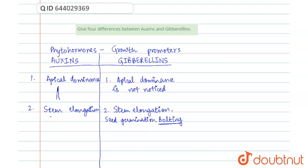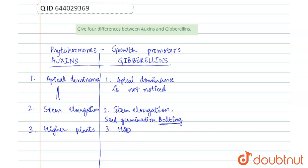Auxins are generally found in higher plants, but gibberellins are found both in higher plants as well as in plant fungi.